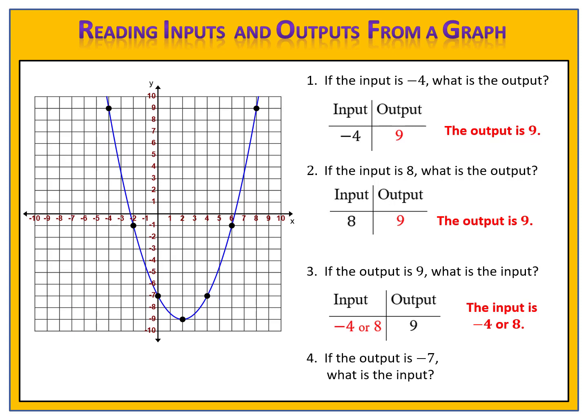Here's one for you to try. If the output is negative 7, what is the input? Draw your line across the graph at negative 7 and find where those lines intersect. Find the inputs. Pause the video and come back when you're ready to check. Let's see how you did. We draw our line across the graph at negative 7. We see that we intersect at two spots — here, and here. The first input on the left is 0. The second input on the right is 4. So the inputs are 0 or 4.